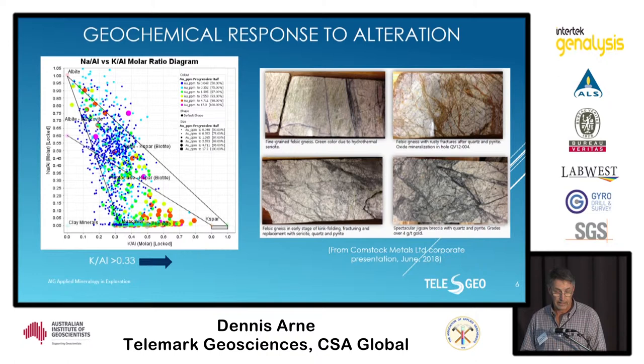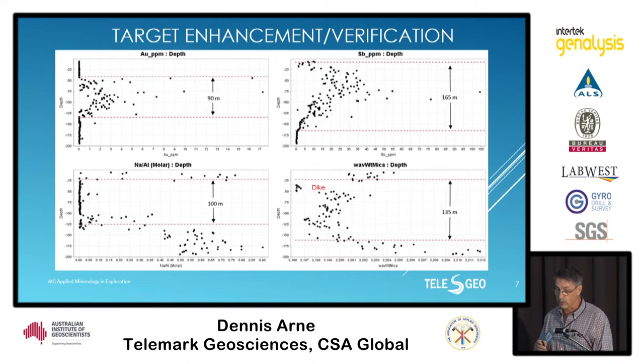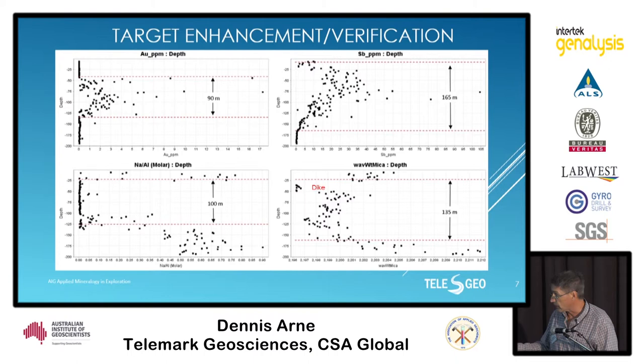We took a split of some of the coarse reject material from two drill holes — I'm just going to show you data from one. The analyses were done by Bureau Veritas on their HyLogger in Perth. The first thing to note is a clear gold zone that is quite abrupt, with not much indication on either side that you're in proximity to gold mineralization.